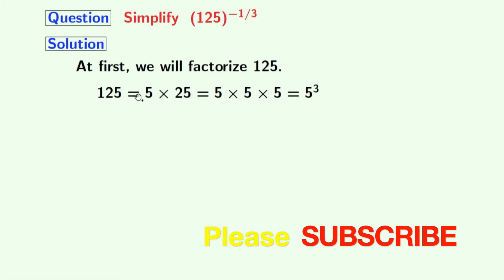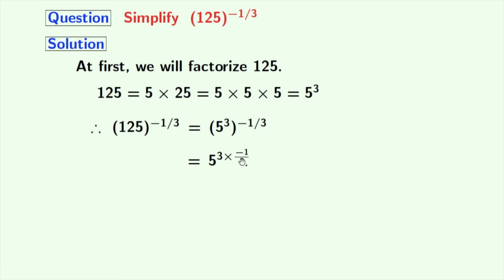As 125 is equal to 5 to the power of 3, this third expression, that is 125 to the power of minus 1 by 3, can be written as 5 to the power of 3, whole to the power of minus 1 by 3.